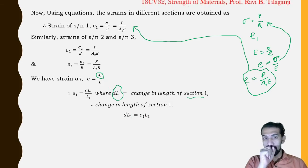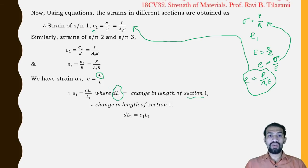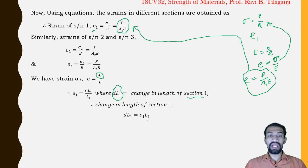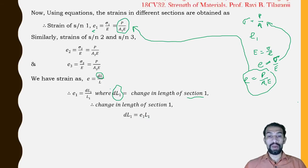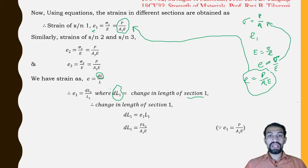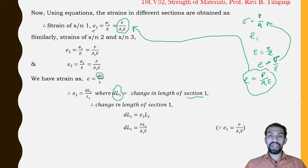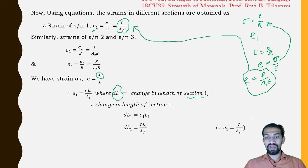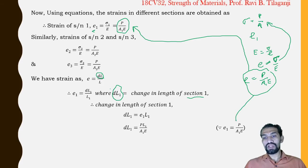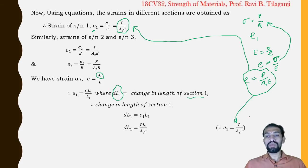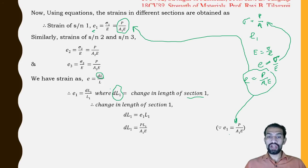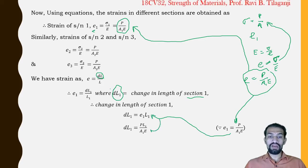Substituting ε1 = P/(A1·E) into the formula: dL1 = P·L1/(A1·E). So the change in length of section 1 equals P times L1 divided by A1 times E.